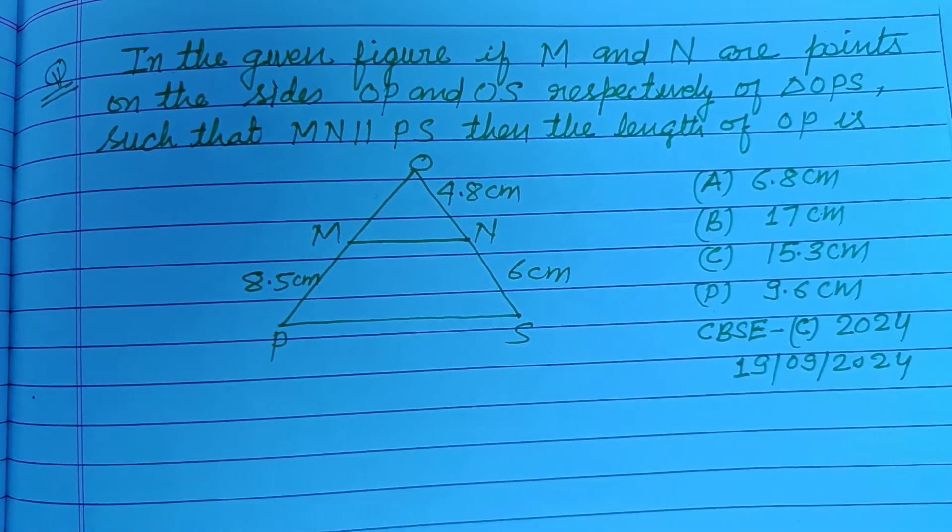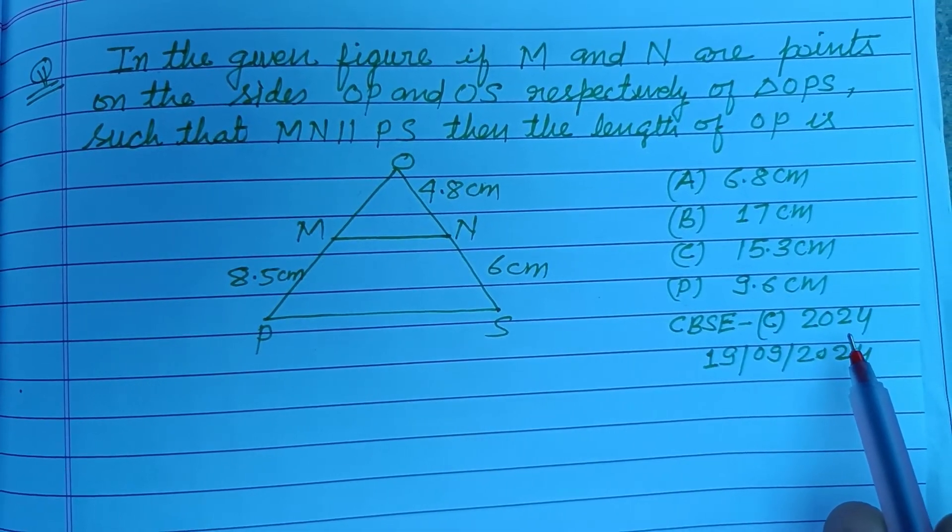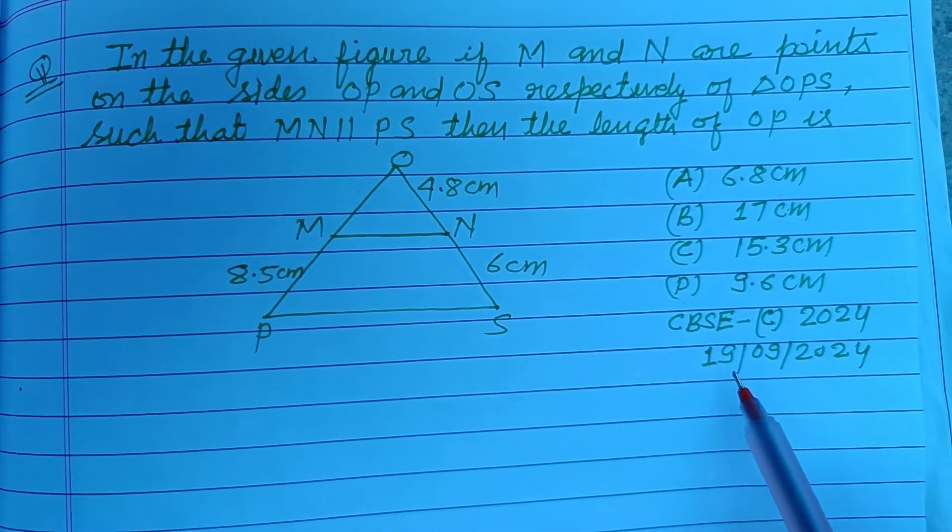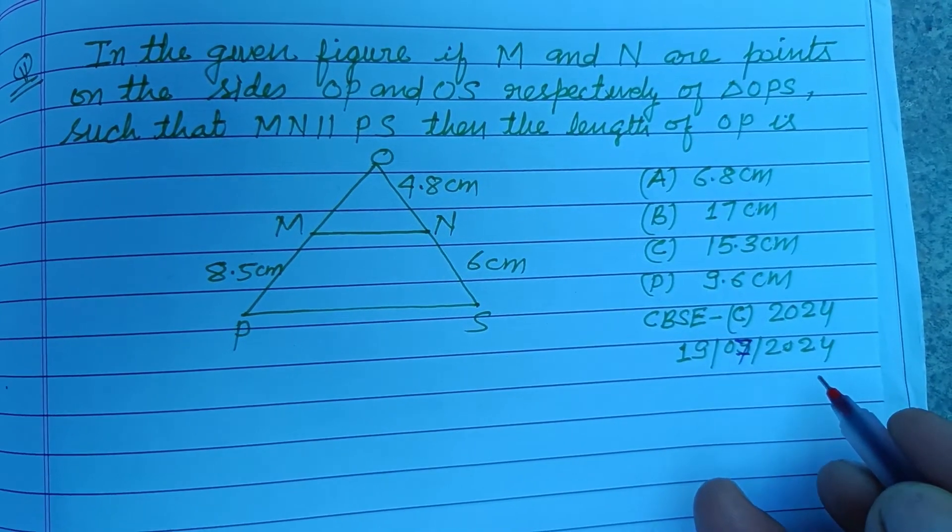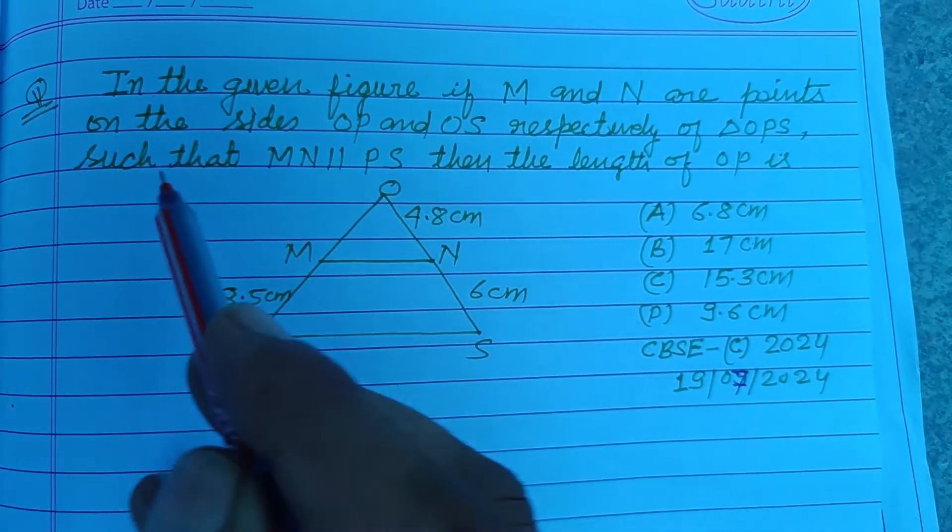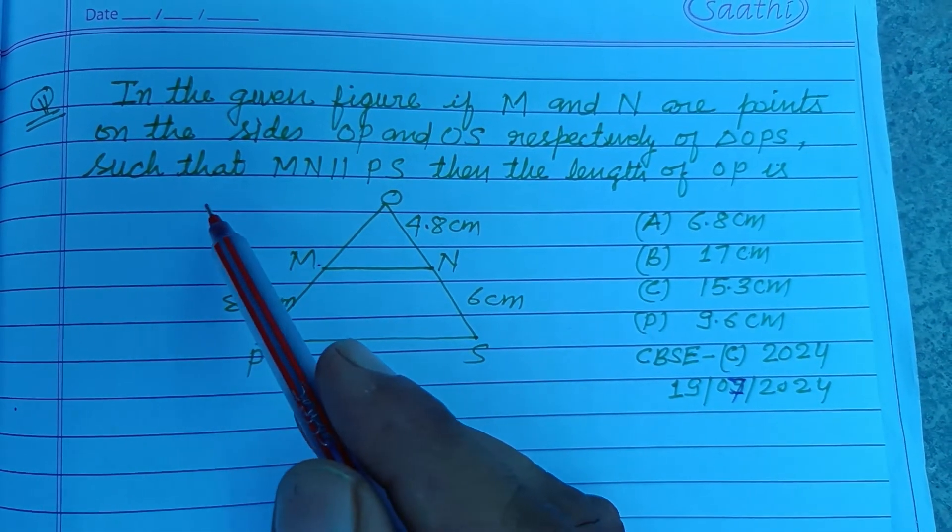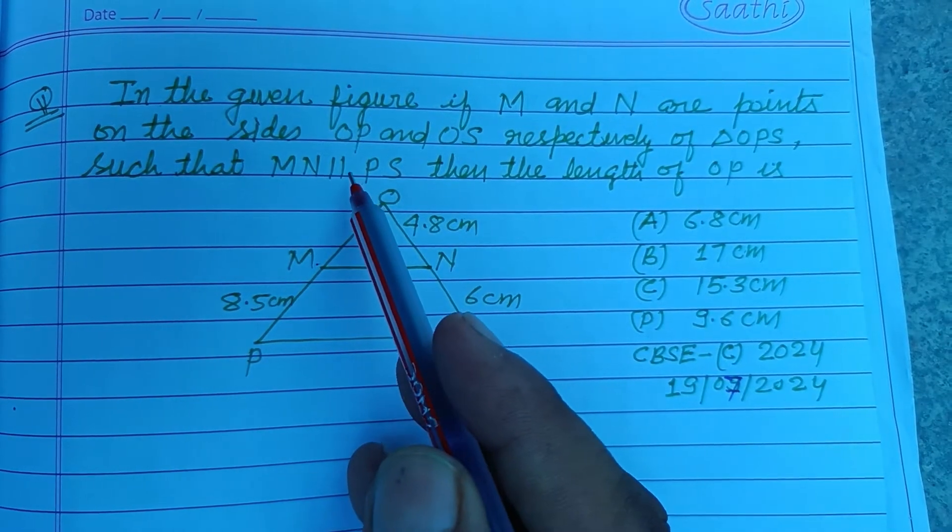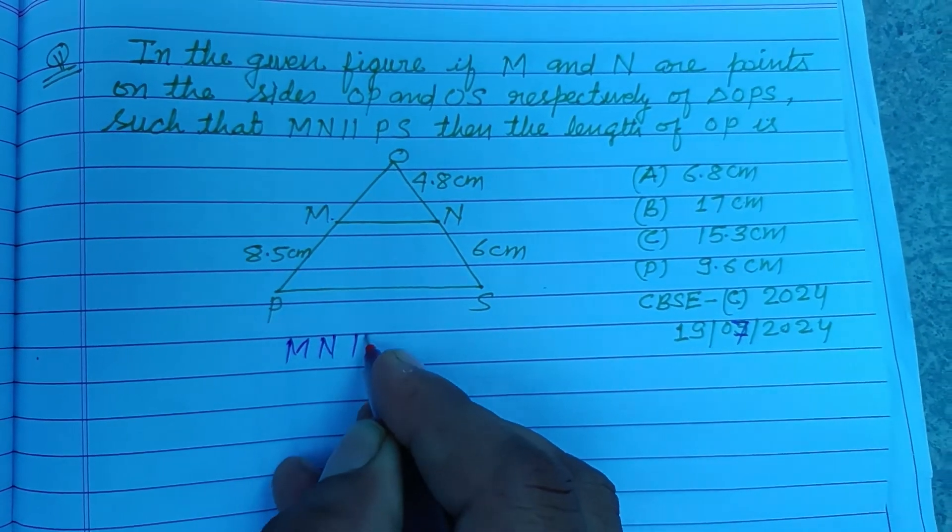Hello viewers, warm welcome to this YouTube channel. This is a question from CBSE board exam 2024 compartment, July 19th, 2024. In the given figure, M and N are points on the sides OP and OS respectively of triangle OPS such that MN parallel to PS.